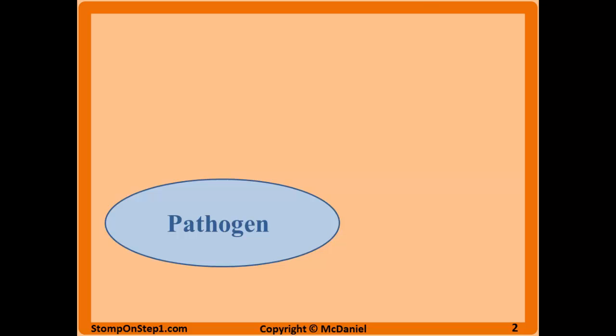I'll show you the simplified version with this slide. You've got a pathogen here — it could be a bacteria, virus-infected cell, fungus, whatever. We'll start with an antibody binding to the pathogen, which is part of chronic inflammation and immunology from B cells. This isn't part of complement yet. But now this antibody is going to interact with the C1 protein, and when C1 binds to the antibody already bound to the pathogen, it activates C1 and therefore activates the complement cascade. Heading through proteins C1 through C9, you can have three main end results.